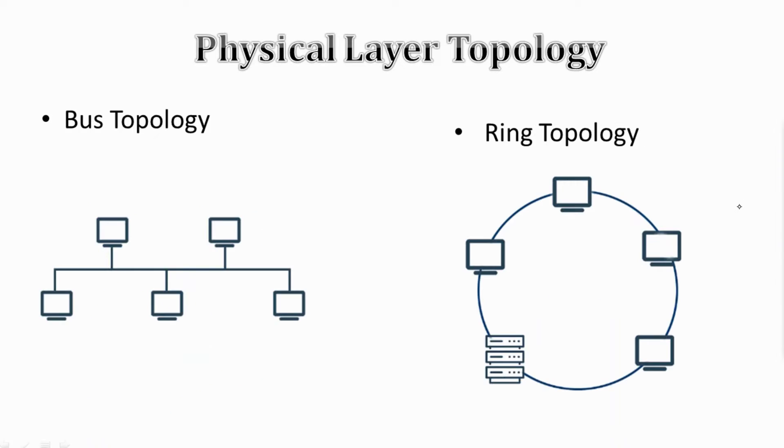In bus topology, multiple devices are connected through a single cable known as a backbone cable with the help of tap and drop lines. If this cable stops working, everybody will be interrupted.